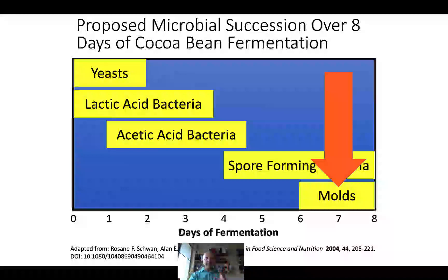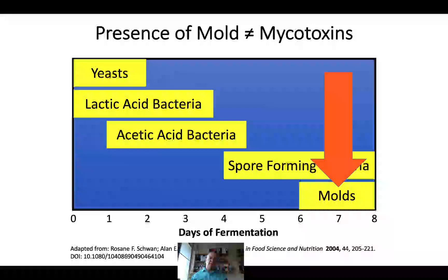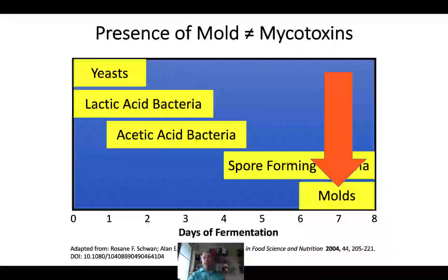These molds can grow on the cocoa beans. One important point—true of staple grains and other products—is that the very fact that mold is growing on a material doesn't absolutely mean that mycotoxins are present. Mycotoxins are not just a result of mold growing, but are often a result of mold growing under stress of some sort. Mycotoxins are often produced as a stress response, which means preventing the stresses that cause this formation may be a way of combating mycotoxin production.